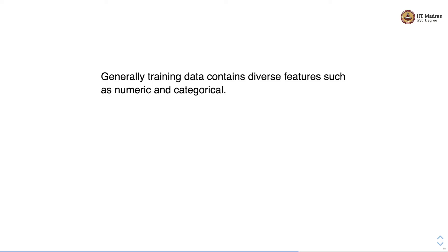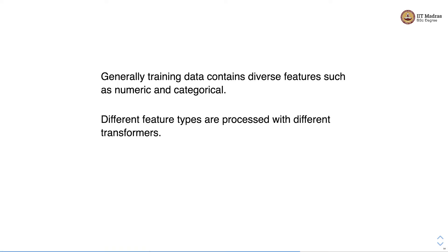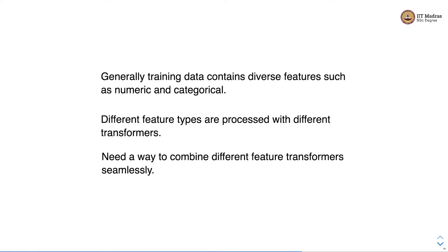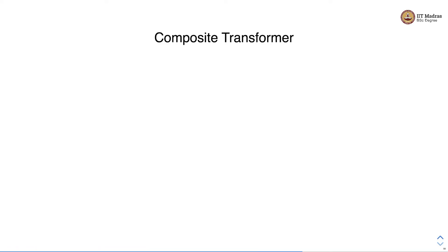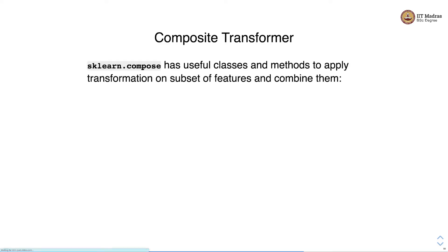Generally, training data contains diverse features such as numerical and categorical features. Different types of features require different transformations, and we need a way to seamlessly combine these different transformers. sklearn provides a composite transformer for this purpose.